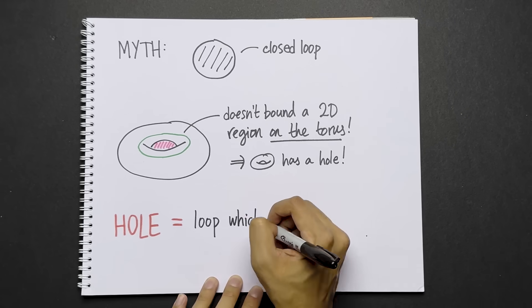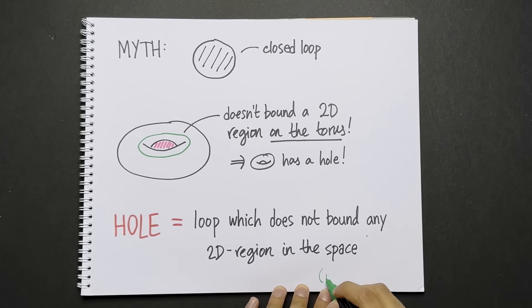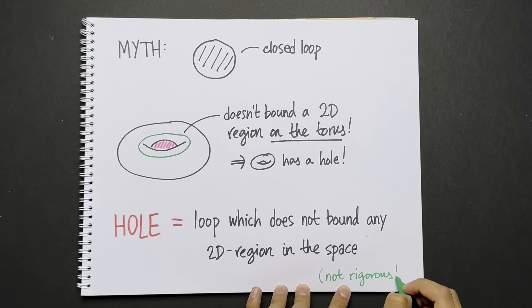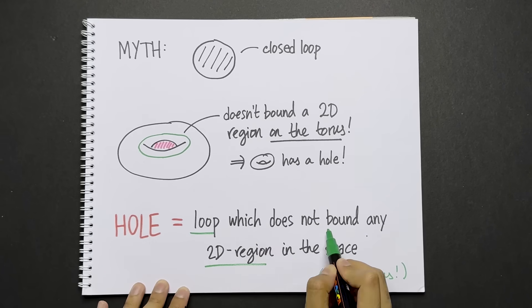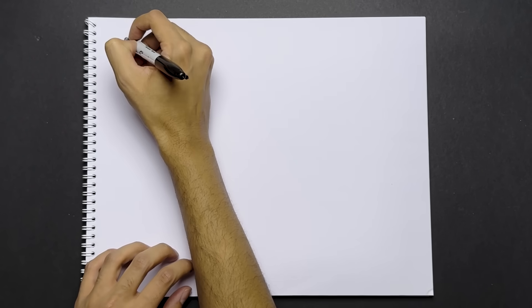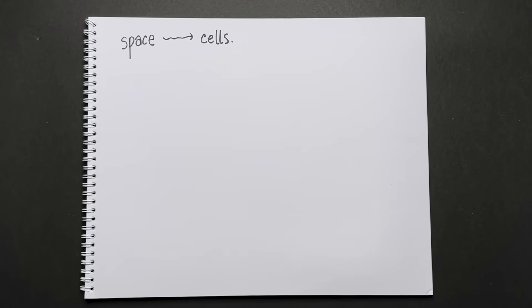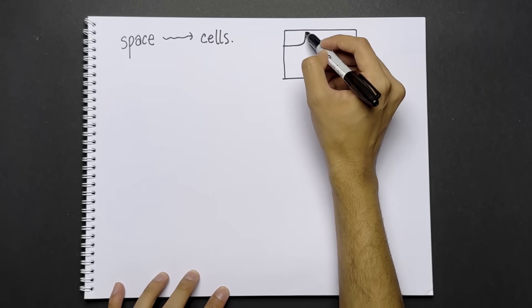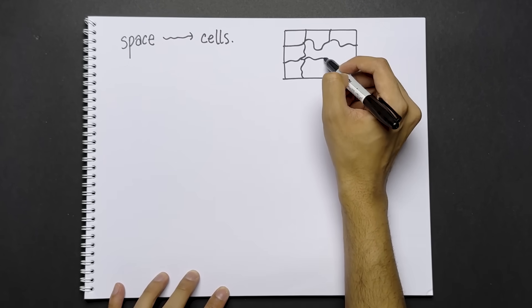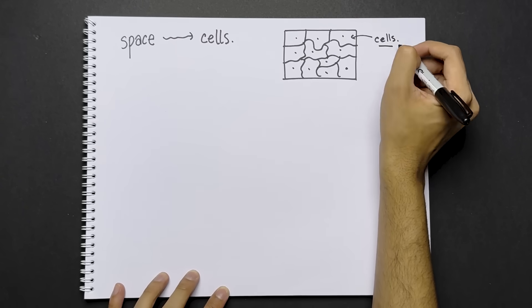In other words, a hole is a loop which does not bound any 2D region in the space. But the problem with this is that it's not rigorous. It's not clear what loop, bound, and 2D region mean. We need to make it precise. To do this, we need to look at our spaces differently. We're going to break them into pieces called cells. Just like how in biology, cells are the smallest and simplest pieces. They're the building blocks of all organisms. In homology, cells are the simplest building blocks of a space.